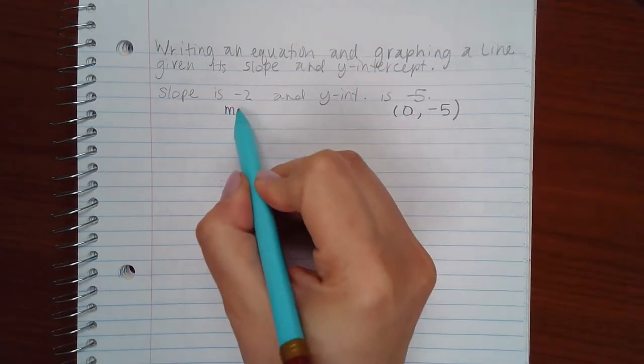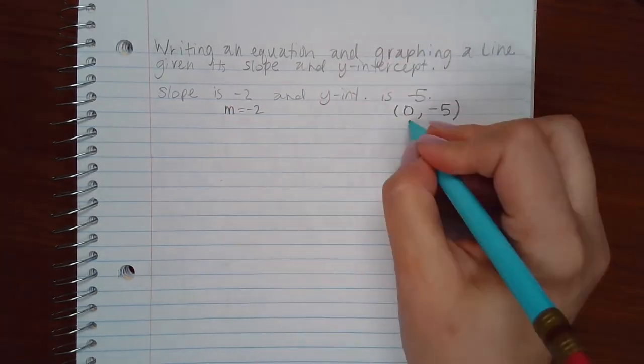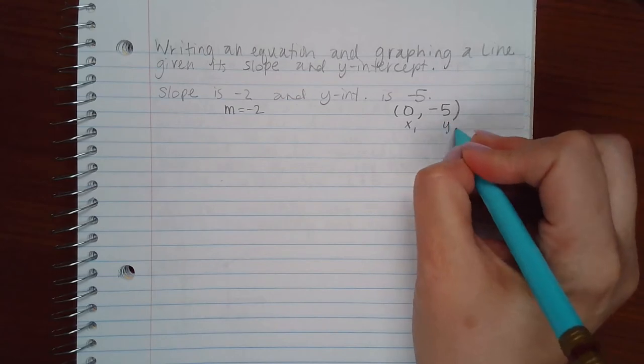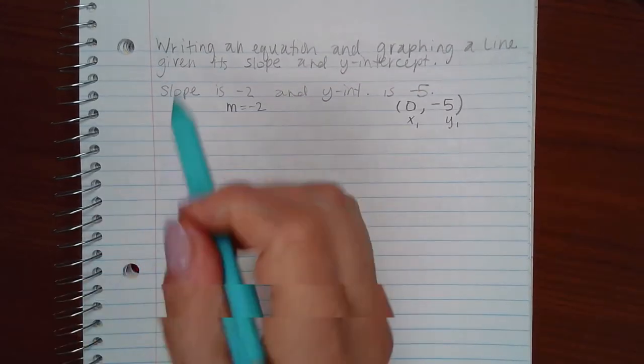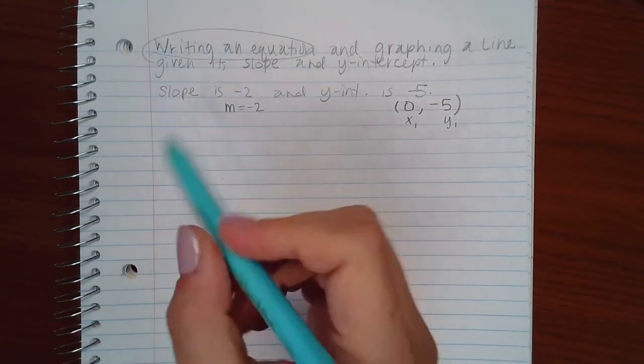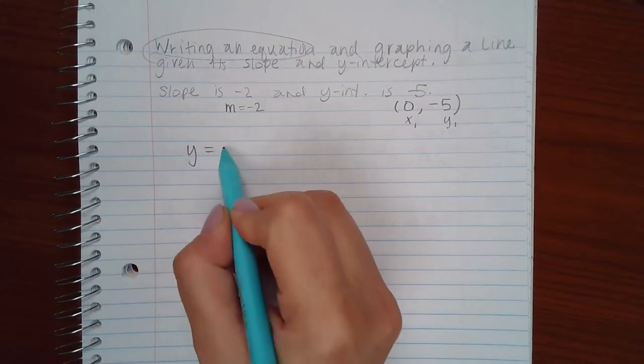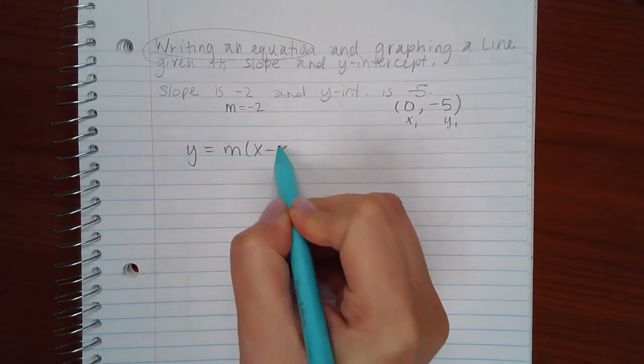And the slope is negative 2. This is your x1, this is your y1. And anytime you're asked to write an equation, you should automatically be using this formula.